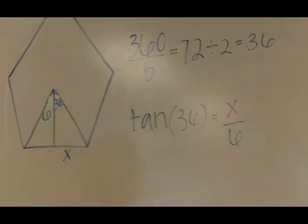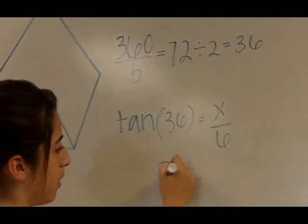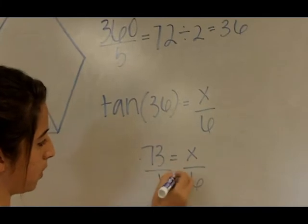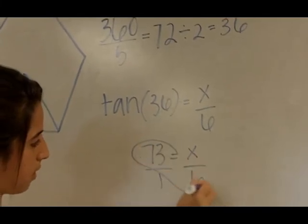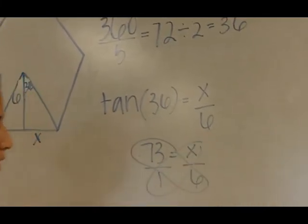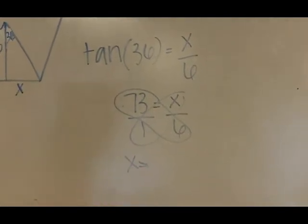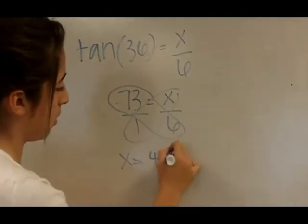And then the tangent is going to be 0.7341, and then you cross multiply, and x equals 4.38.